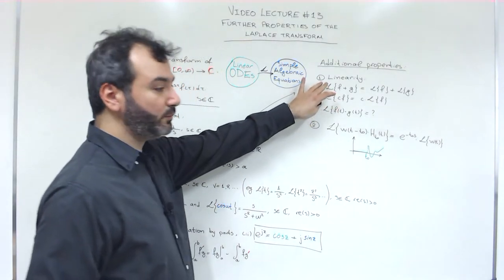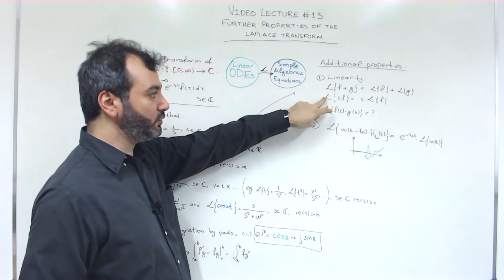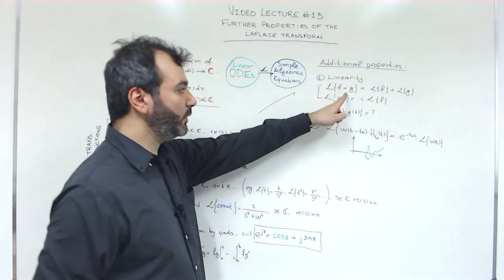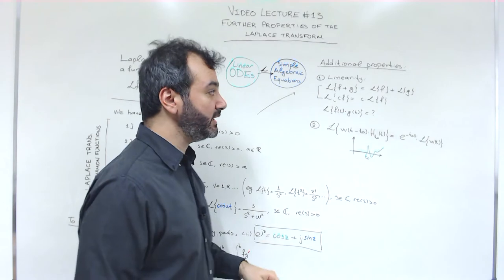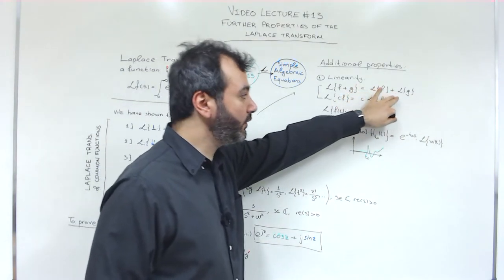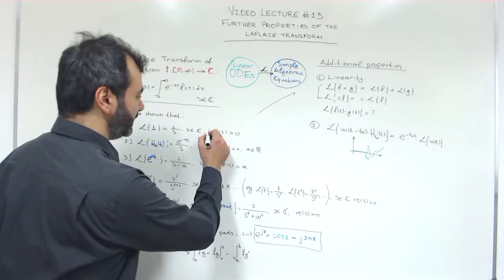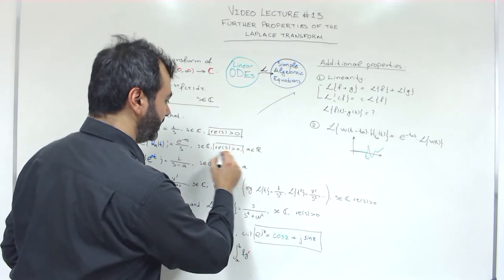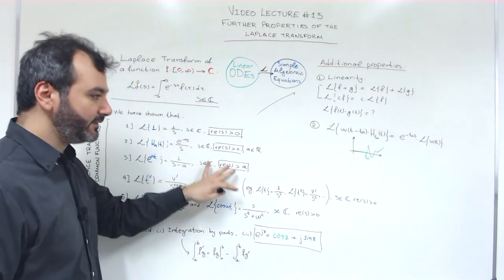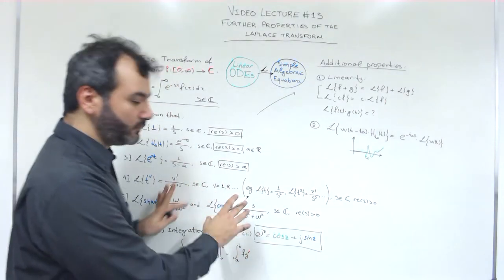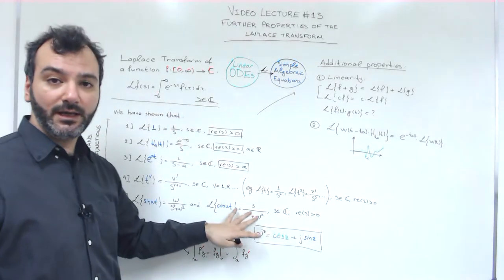Then we looked at a few properties of the Laplace transform. First of all, it is linear — it satisfies two conditions. Whenever we have a sum of two functions f plus g, the Laplace is the Laplace of f plus the Laplace of g, so long as all these Laplace transforms exist. The Laplace transform has a domain; it is not defined for all complex numbers, only for some. We haven't really discussed how to derive this domain more generally, or what functions even have a Laplace transform at all — we will get there later.